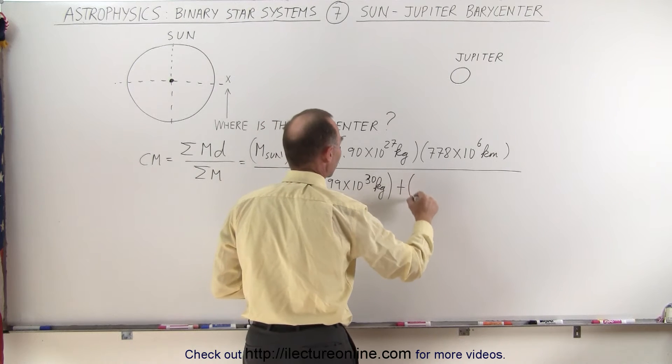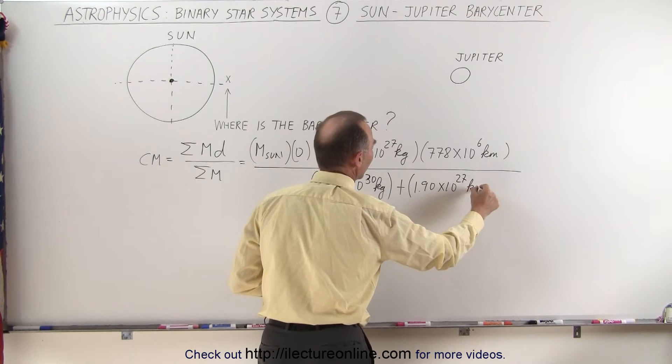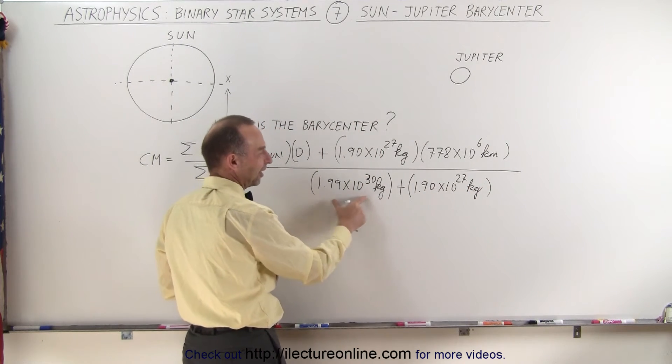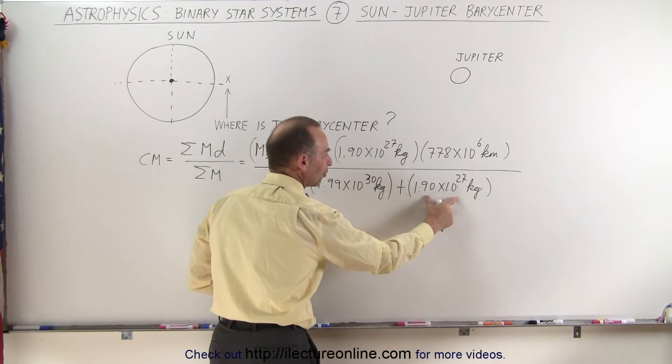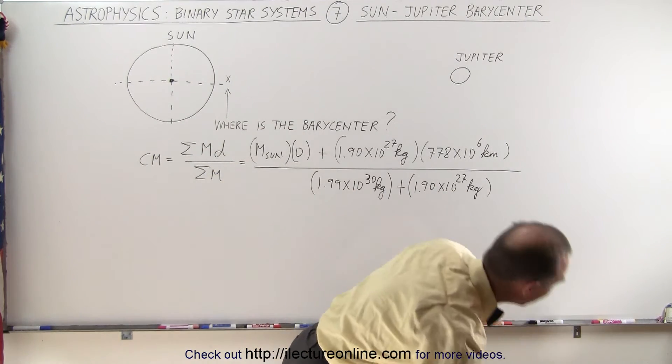So we add that to the mass of Jupiter, 1.90 times 10 to the 27 kilograms. Notice that the denominator is primarily the mass of the Sun, since the mass of Jupiter is so small in comparison, only 0.1% of the total mass of the two objects together.